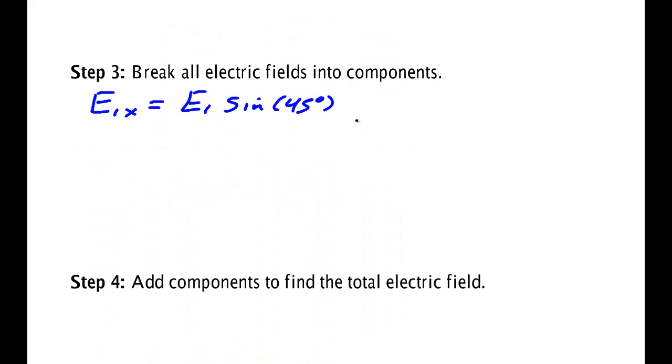And if I punch, I'm going to punch calculator here. 9 second E to 9 times cosine, or sine, I'm sorry, of 45. And I get 6.36 times 10 to the 9th newton per coulomb.